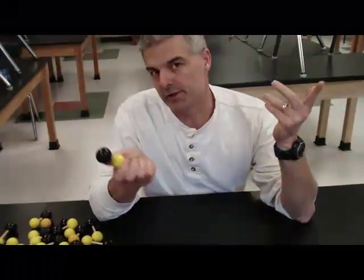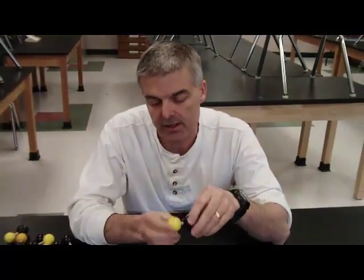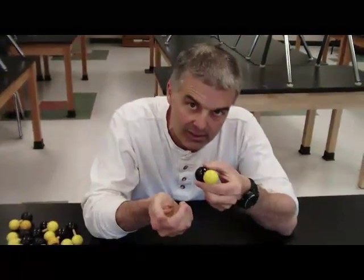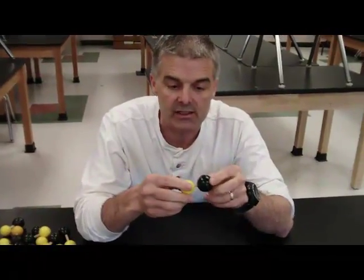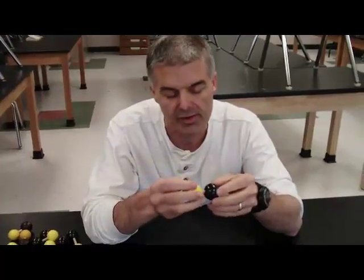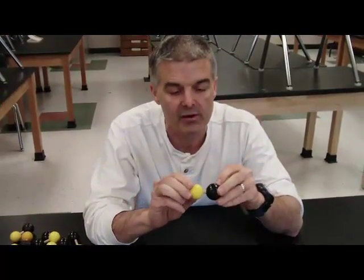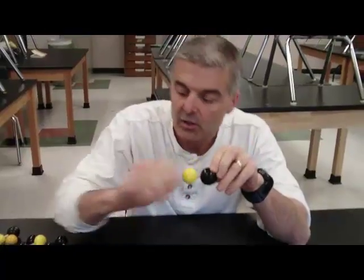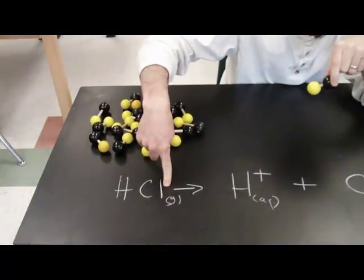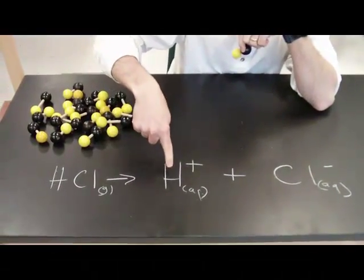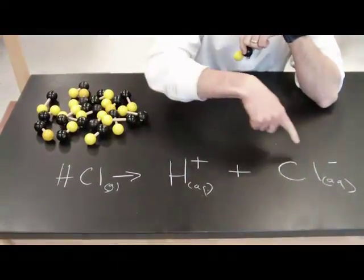I want to talk about the difference between a strong acid and a weak acid. I have a molecular model that represents hydrochloric acid, HCl. HCl is a strong acid — one of the six strong acids that exist for our purposes. What that means is it completely dissociates. So if I take this HCl, which is typically found as a gas as symbolized in the chemical equation, and drop it into water, it will dissociate completely into hydrogens and chlorides.